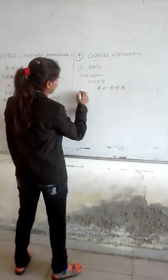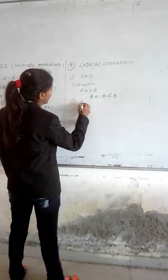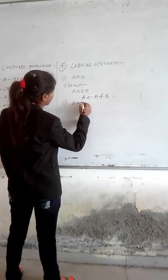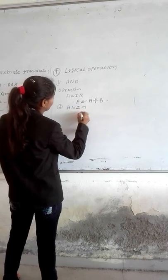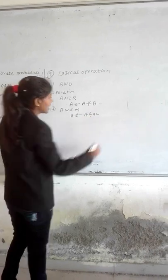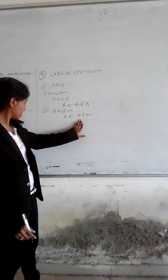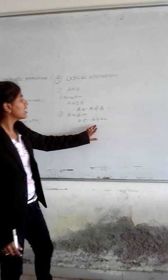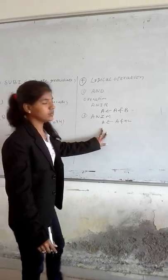And store in the accumulator. The second is ANI. With the content of the register and store in the accumulator.